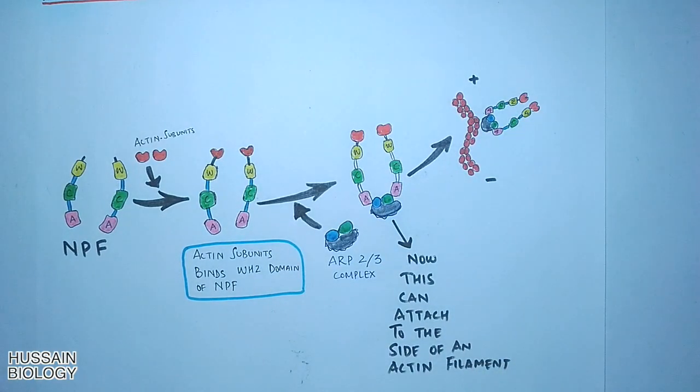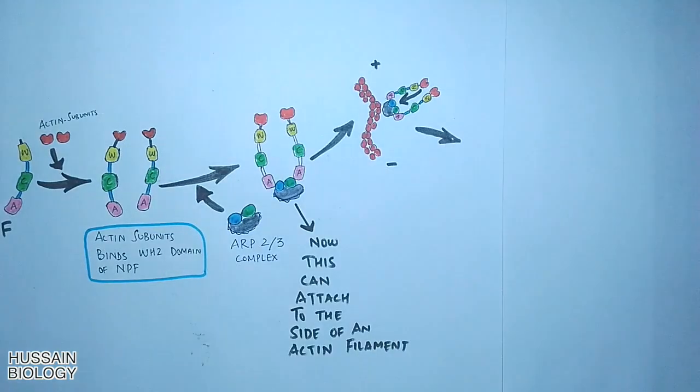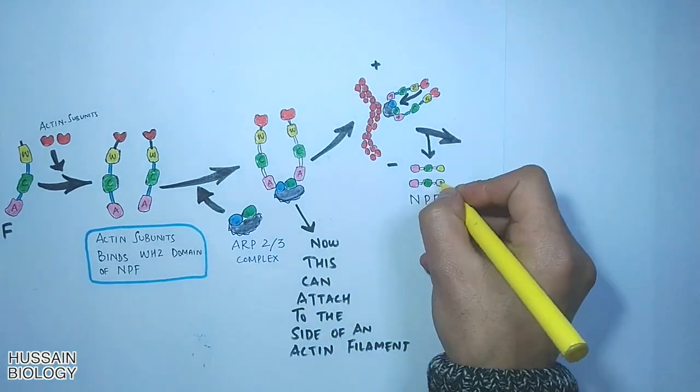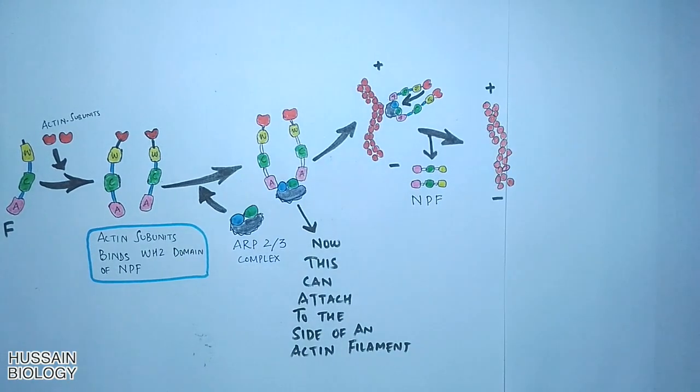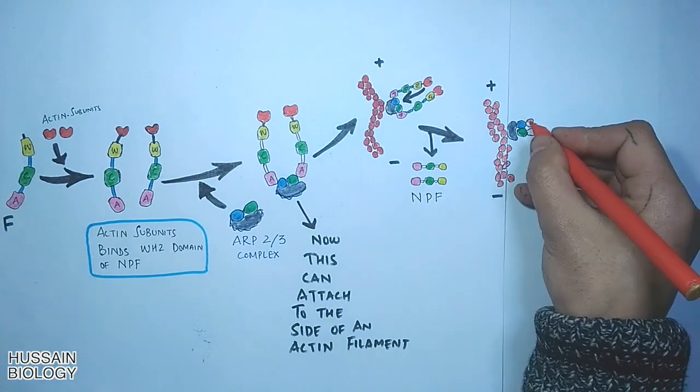We see in the diagram the ARP complex attaches to the side of an actin filament. Then finally the nucleation promoting factor is released from ARP complex, and actin subunits from W domain are shifted onto the ARP2/3 complex.